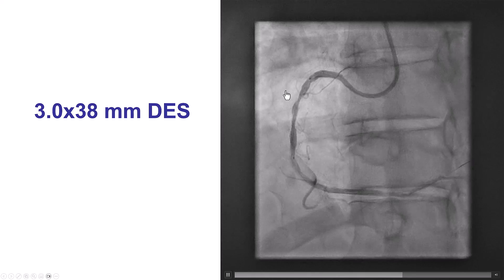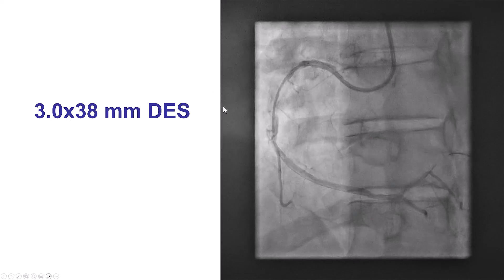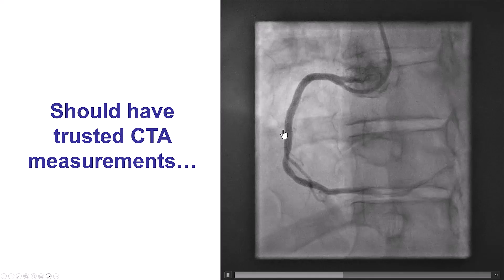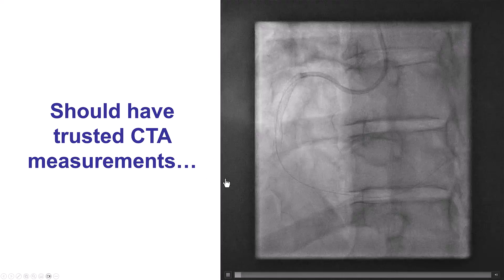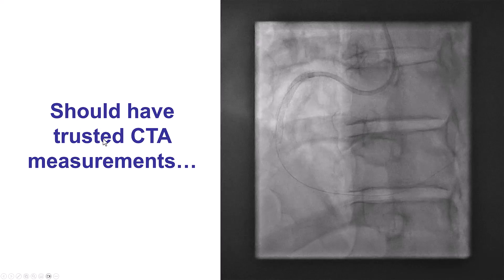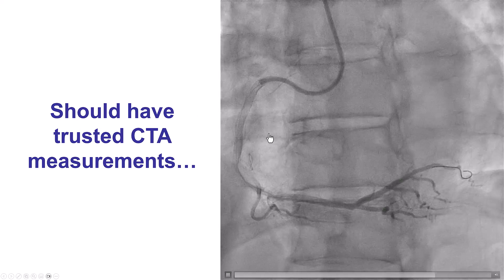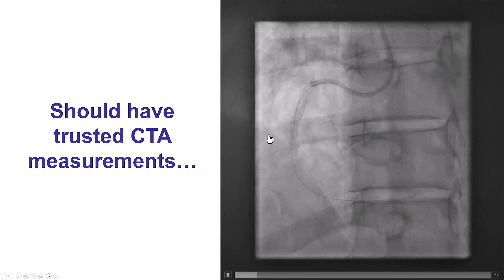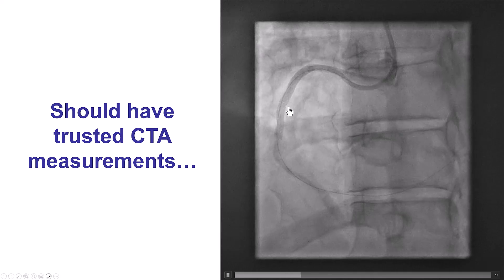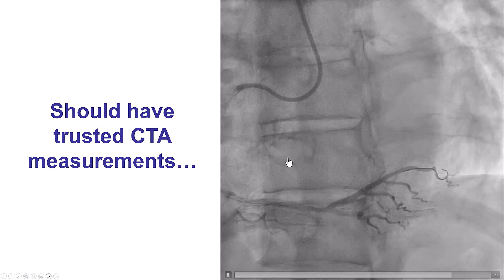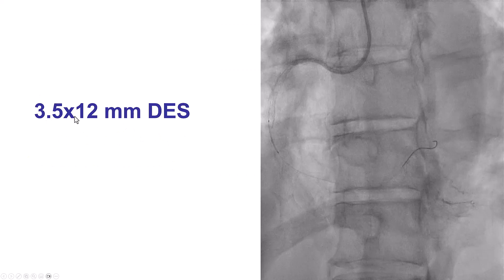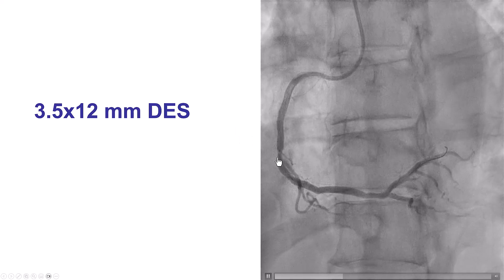We thought that a shorter stent at 3×38 mm would be enough, so we placed a 3×38 mm drug-eluting stent across the lesion of the right coronary artery. But the distal edge didn't look good because there was more plaque distally that we hadn't covered. This was a reminder that the CT measurement was 47 mm, so we should have probably placed a 48 mm stent. Instead, we asked for another stent and placed a 3.5×12 mm drug-eluting stent more distally.